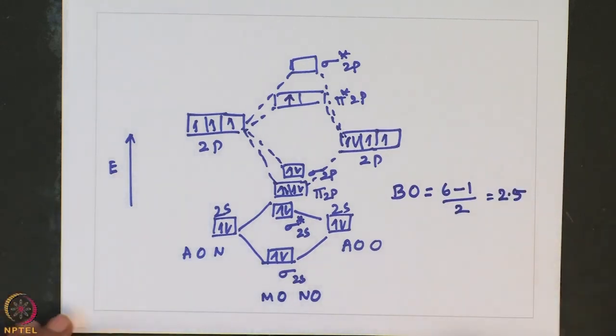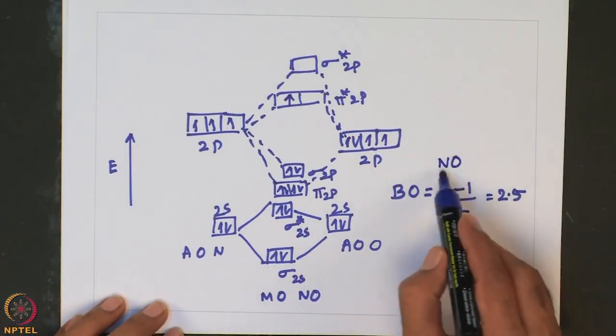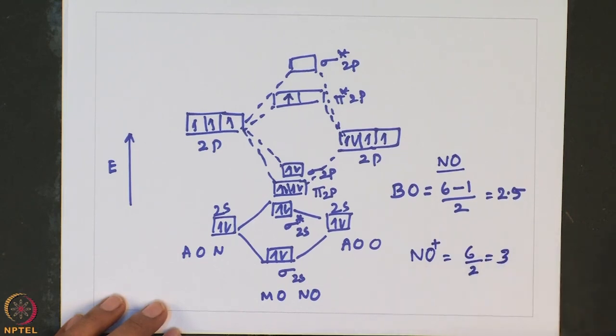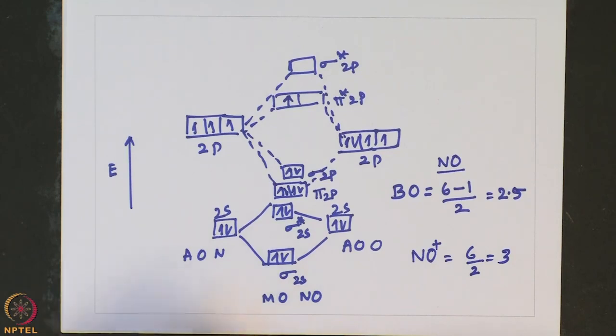Bond order of NO is 2.5. That is the reason NO has a tendency to lose the lone electron present in the anti-bonding orbital to gain extra stability. Once that electron is removed, it becomes NO⁺. For NO⁺, the bond order is 6/2 = 3, so the NO bond is strengthened. This is why the NO ligand tends to act as a cationic ligand by eliminating the electron present in the anti-bonding orbital. The reactivity and properties of molecules can be predicted simply by writing the MO diagram and examining the electronic arrangement in bonding and anti-bonding orbitals.